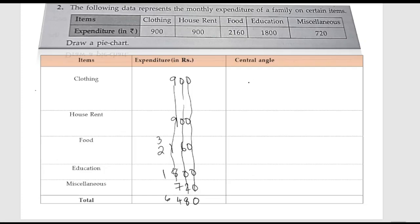Next, to find the central angle for each item, we use the formula: expenditure divided by total expenditure, multiplied by 360 degrees. We know the total is 6480, and the angle in a circle is 360 degrees.